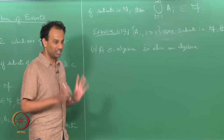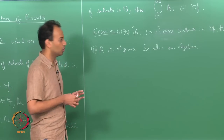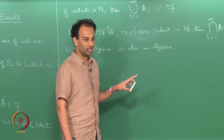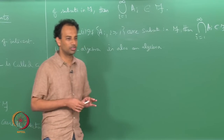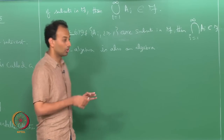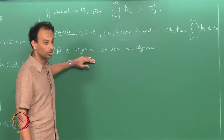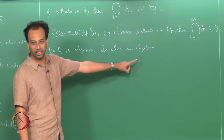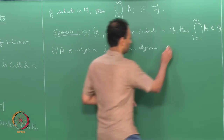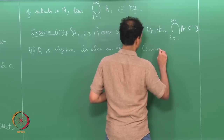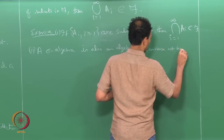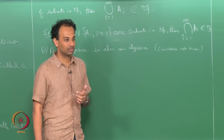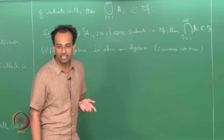What turns out is that it is not entirely trivial to show that there are algebras which are not sigma algebras. The converse is not true — not every algebra is necessarily a sigma algebra, though every sigma algebra is necessarily an algebra. To show the converse is false, you just need to produce an example, and we will see one such example in the first homework.